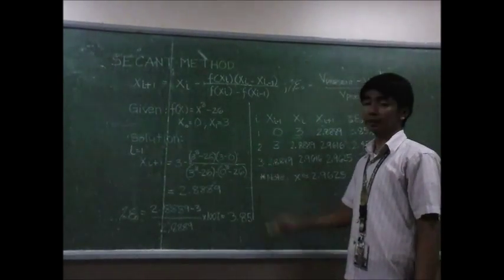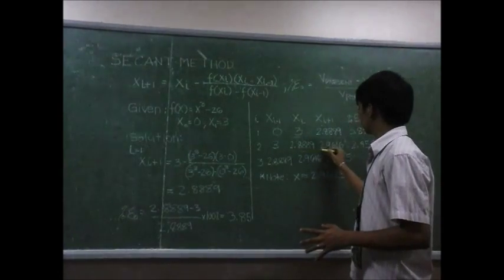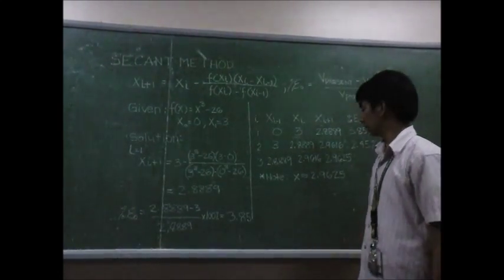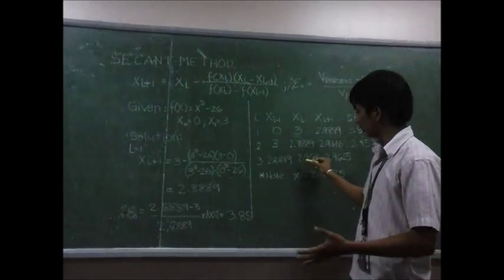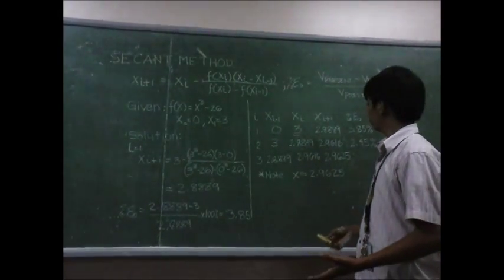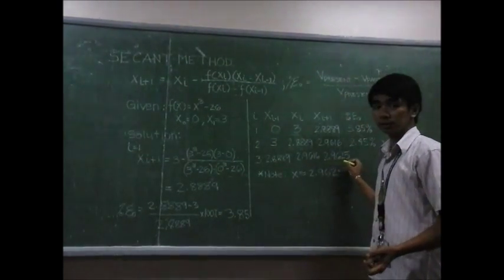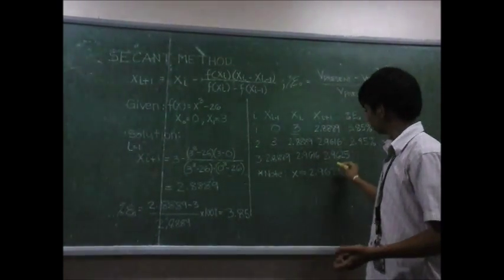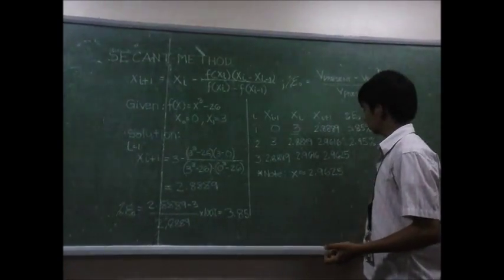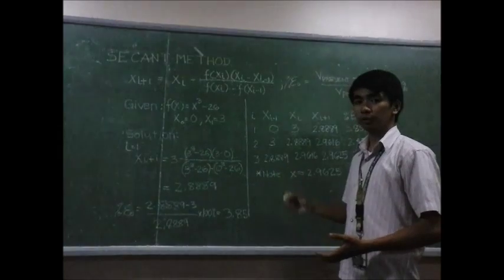For our third iteration, we again use the latest values of x: 2.8889 and 2.9616. The value of x_{i+1} is 2.9625. Notice that this value is the approximated value when we use the calculator.